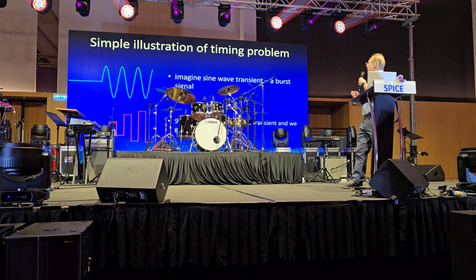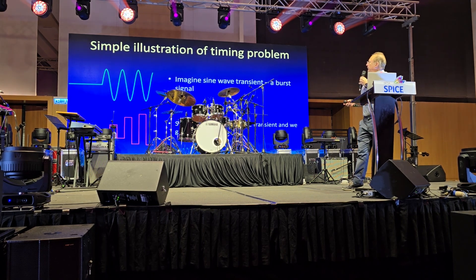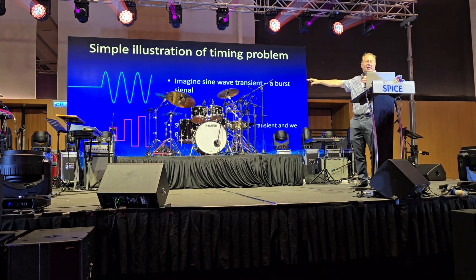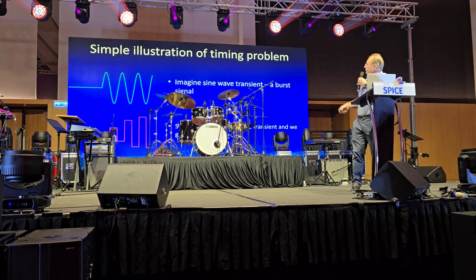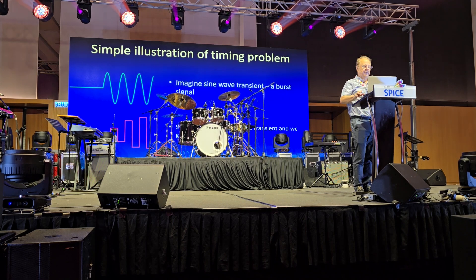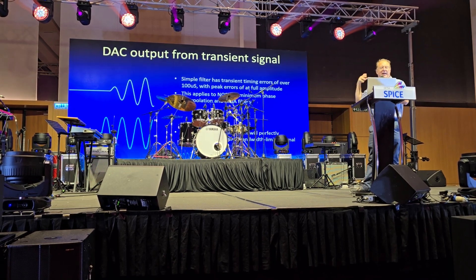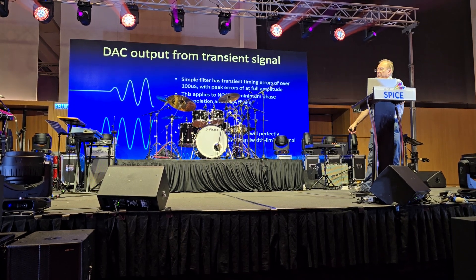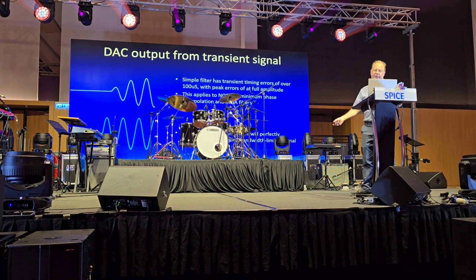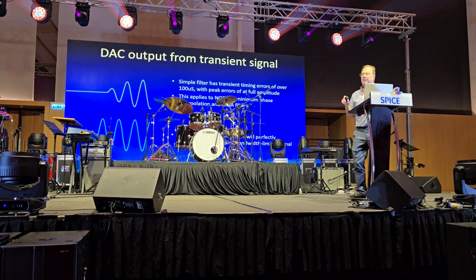To illustrate the timing problem: imagine a 20 kilohertz burst signal. You can see the start, and the digital data builds up as it covers the transient. When you put that into a simple interpolation filter, the output on the yellow trace shows a transient error of around 100 microseconds — a huge number. This occurs with NOS filters, IIR filters, minimum phase filters, and MQA filters — basically all of the high-end audio filters available.